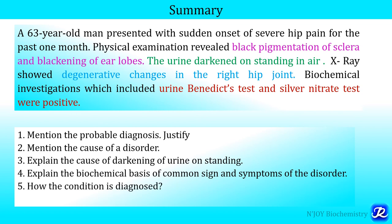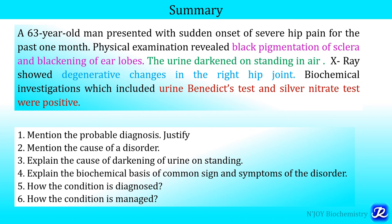How is the condition diagnosed? Various tests can be done: ferric chloride test, Benedict test, ammoniacal silver nitrate test, and quantitative estimation by tandem mass spectrometry or HPLC. How is the condition managed? Most patients remain asymptomatic until the third or fourth decade when arthritis presents. Low phenylalanine diet is the mainstay, vitamin C can be given, and nitisinone — an FDA-approved drug for tyrosinemia type 1 — can also be given if required.